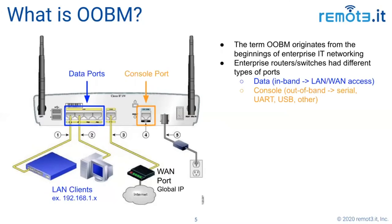Console ports were used for the original setup and configuration of the router, and any ongoing troubleshooting or maintenance work with the IT department. Console ports were normally serial, RS-232, or USB — not necessarily Ethernet. That's where the term 'out-of-band' comes from.